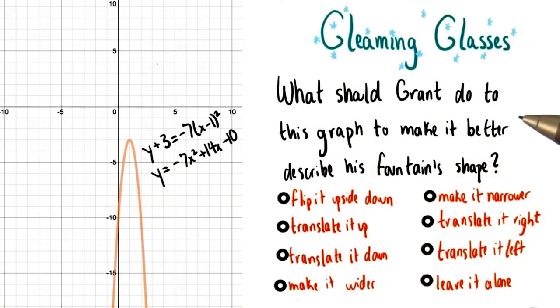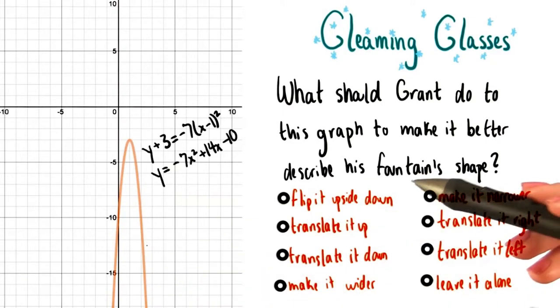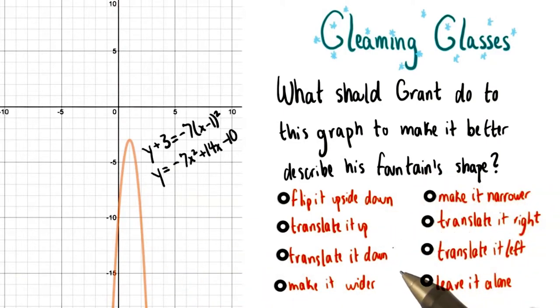So what one step should we do to this graph to make it better describe that fountain's shape? Should we flip this parabola upside down? Should we translate it up? Translate it down? Make it wider? Make it skinnier? Translate it to the right? Translate it to the left? Or just leave it alone altogether?